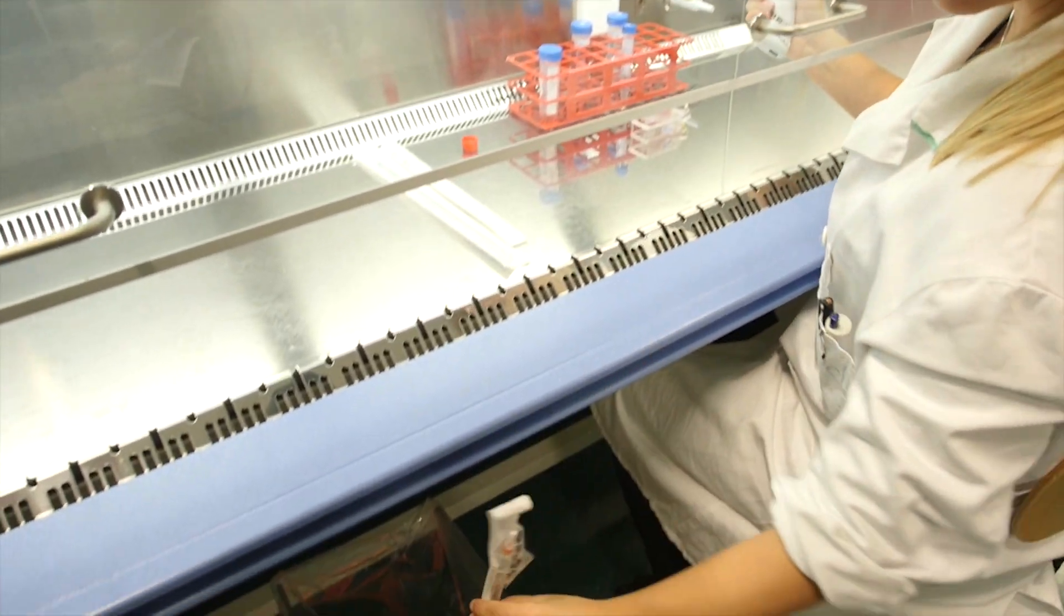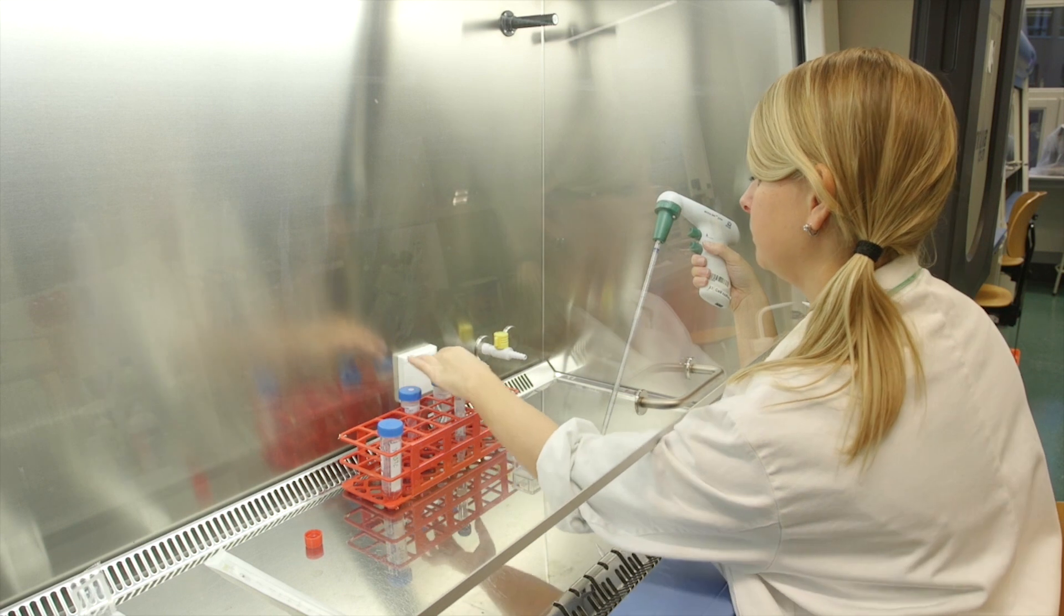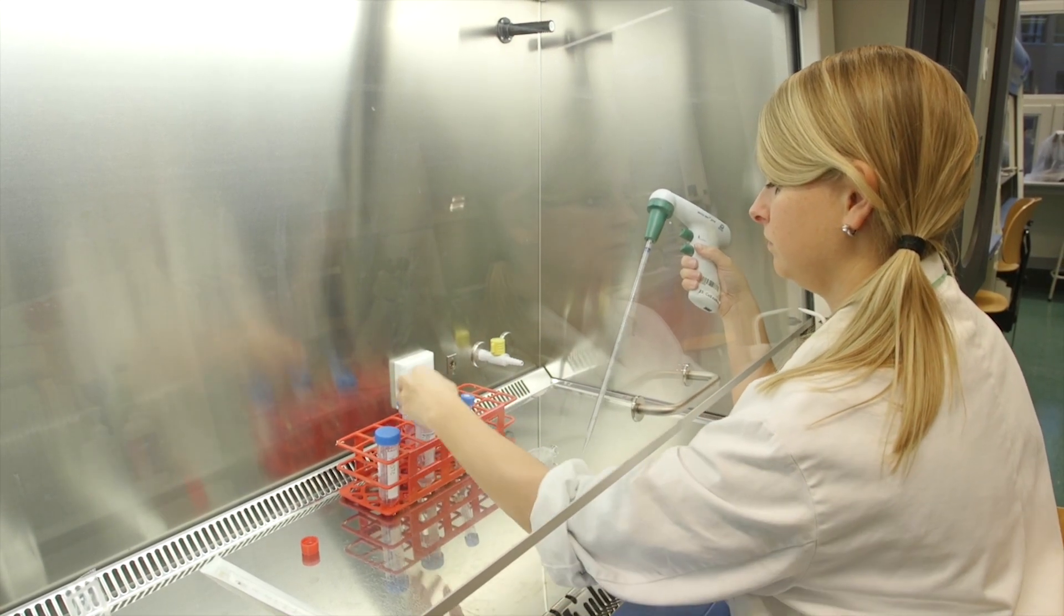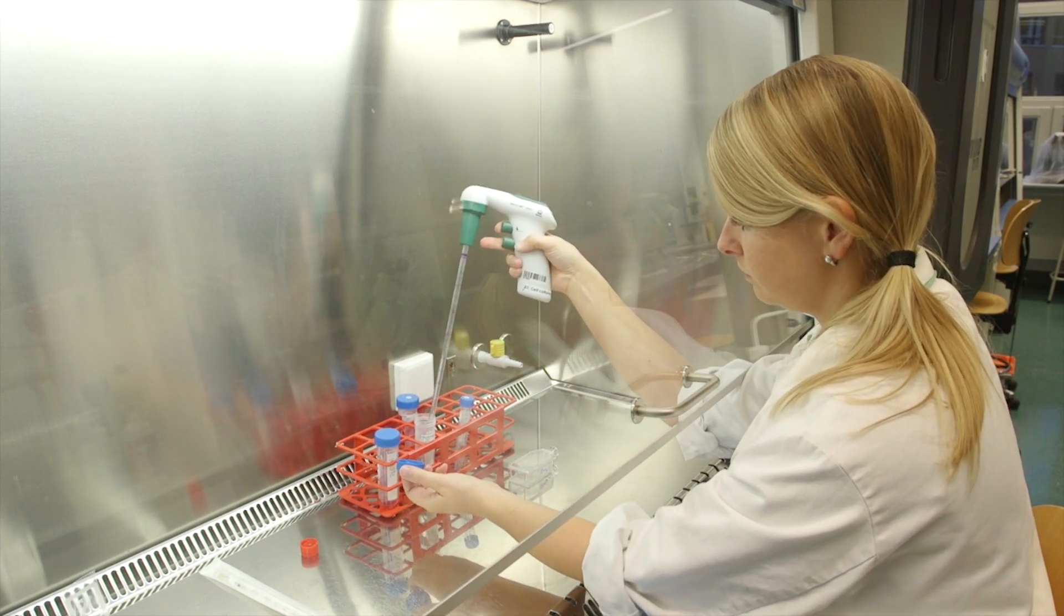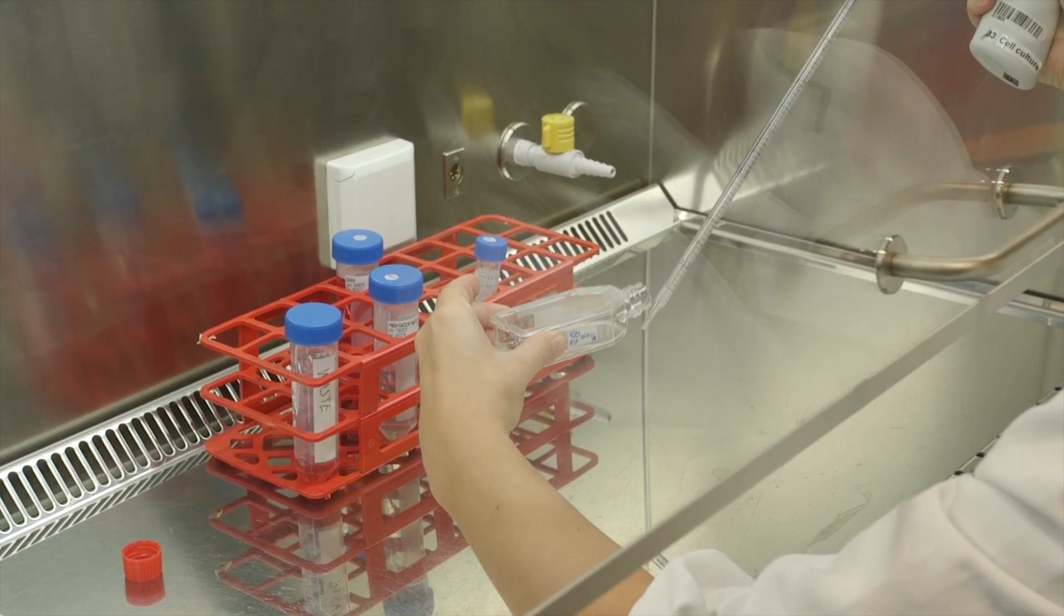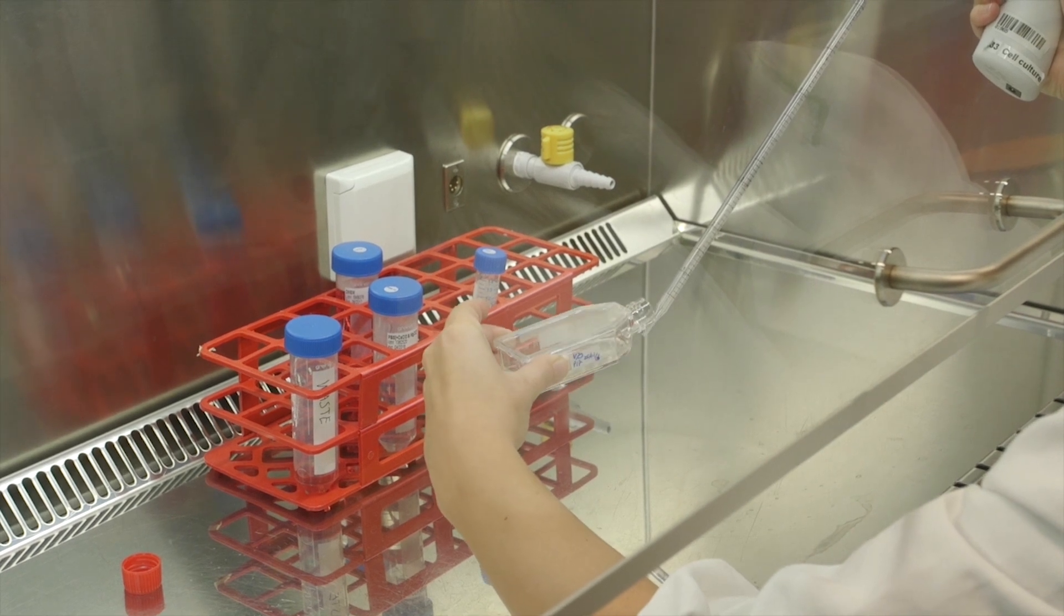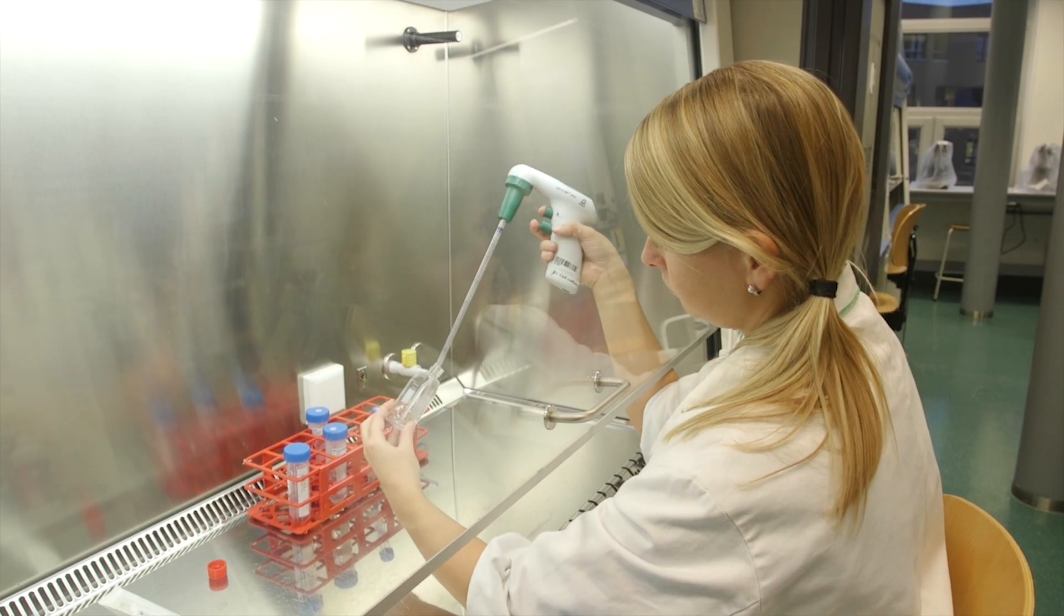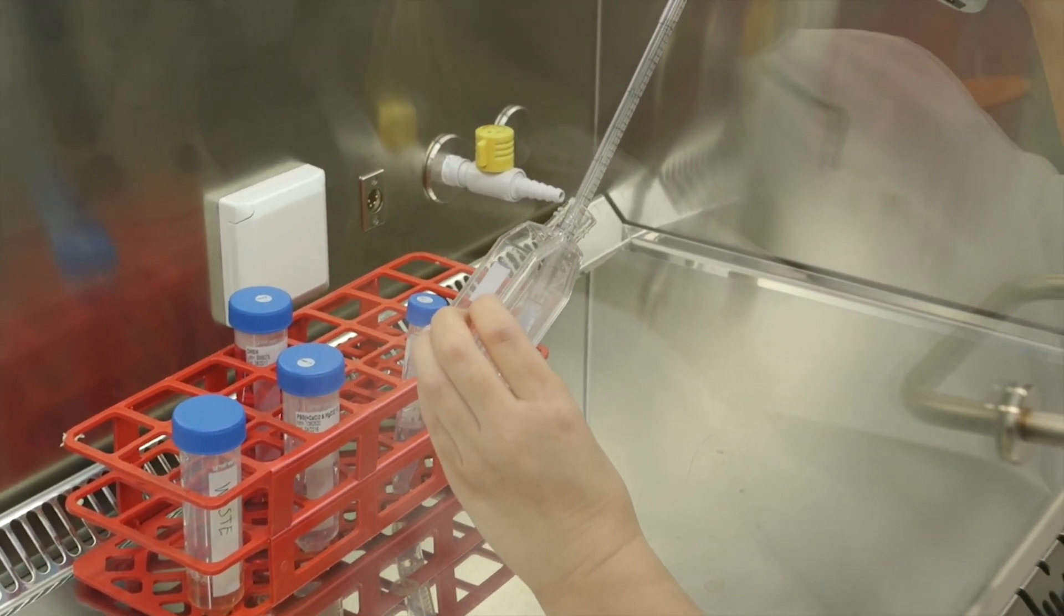The cells are now dry as they are not covered with medium, which is not good for the cells. Therefore, move on quickly to washing with PBS. Fill a pipette with 5 ml of PBS and pipette this to the bottom of the culture flask. Tilt the flask gently so the PBS covers and washes the cells. Using the same pipette, the PBS can be aspirated from the corner. This step is then repeated with a new stripette and fresh PBS.